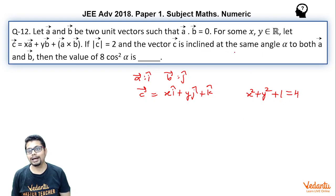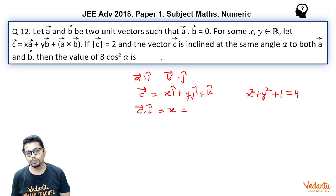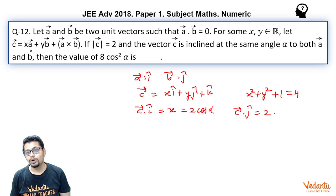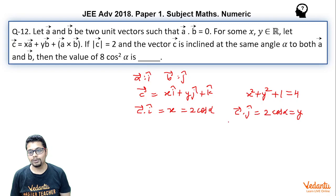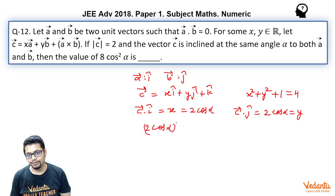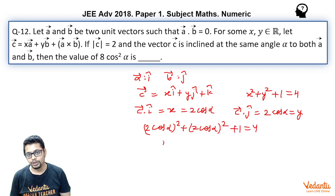Now C vector has angle alpha with A vector, that means with î cap. C vector dot î cap, if you see carefully, would be X only, equal to magnitude of C vector which is 2, times magnitude of î cap which is 1, times cos alpha. So it becomes 2 cos alpha. Similarly, C vector dot ĵ cap would be 2 cos alpha, which again would be Y. Now we know X² + Y² + 1 = 4, so X being 2 cos alpha and Y also being 2 cos alpha gives 8 cos² alpha = 3, and that is the answer.